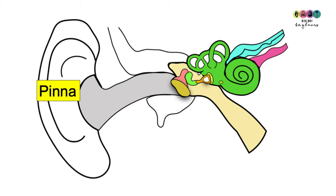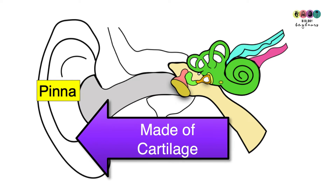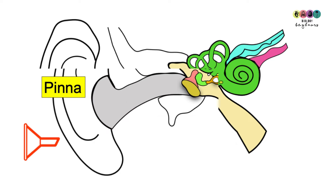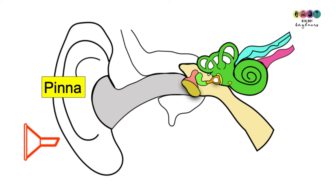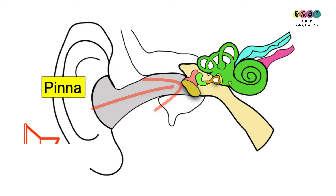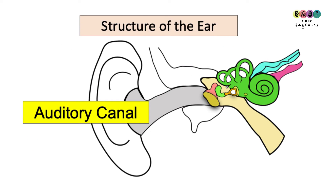Whenever we think of our ear we're thinking of the pinna, the part that's attached to each side of our head. It's made of cartilage and it's covered in skin. The pinna functions a bit like a funnel — it's there to channel sound waves into the ear down towards the eardrum. When sound waves enter the pinna they're funneled into this long tube-like structure called the auditory canal.